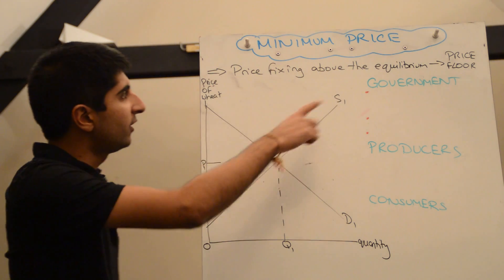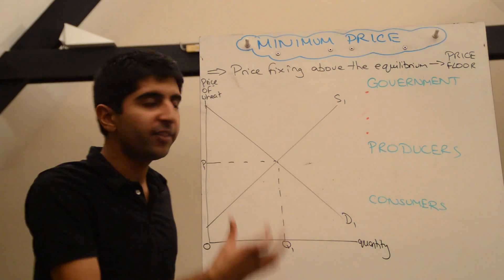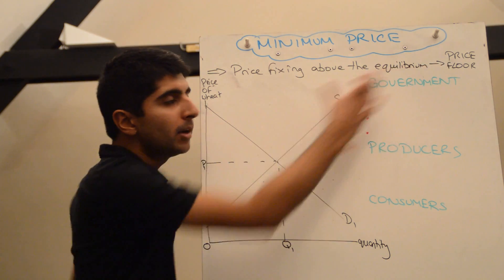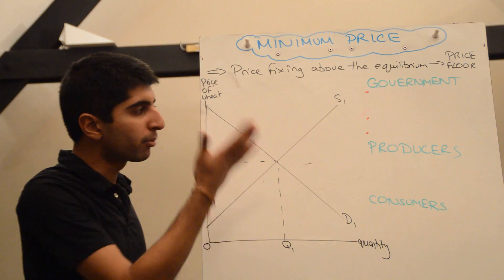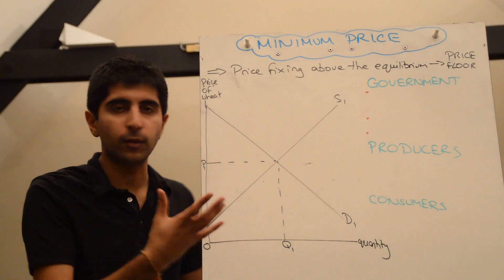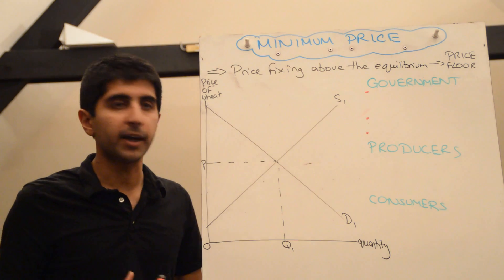So here is a little definition: price fixing above the equilibrium. A minimum price is also known as a price floor, where the price in the market cannot fall below it. It's the lowest price that the market price can be.